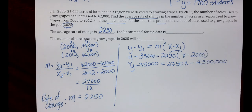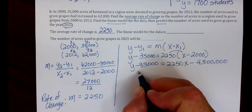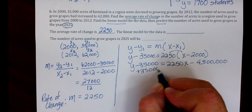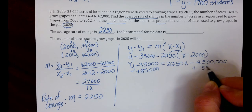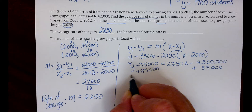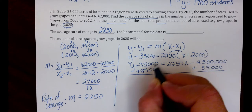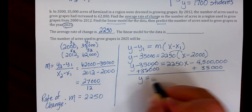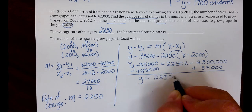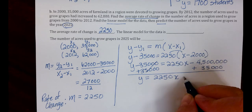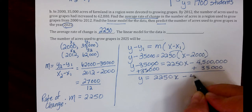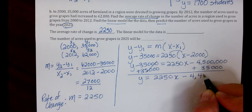Last, we need to solve for Y. We're going to add 35,000 to both sides. This cancels. I get Y equals 2,250X minus 4,465,000.